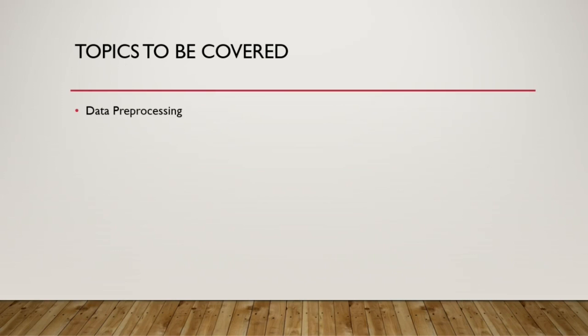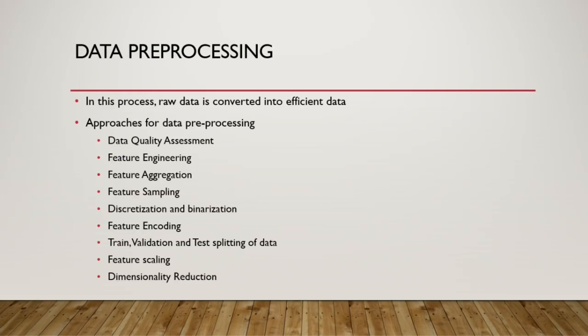In data pre-processing, raw data is converted into efficient data ready for the next phase of processing. There are different approaches that include: data quality assessment, feature engineering, feature aggregation, feature sampling, discretization and binarization, feature encoding, train/validation/test splitting, feature scaling, and dimensionality reduction. These are the most commonly used processes in data pre-processing.